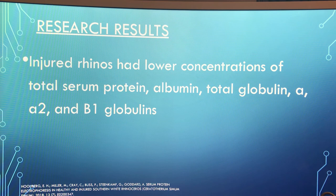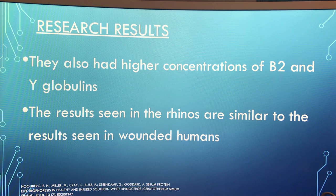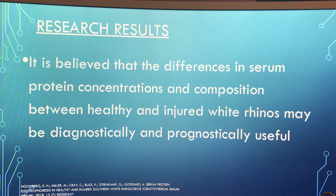Results. Injured rhinos had lower concentrations of total serum protein, albumin, total globulin, alpha, alpha-2, and beta-1 globulins. They also had higher concentrations of beta-2 and gamma globulins. The results seen in the rhinos are similar to those seen in wounded humans. It is believed that the differences in serum protein concentrations and composition between healthy and injured white rhinos may be diagnostically and prognostically useful.